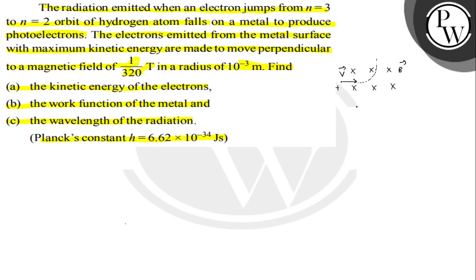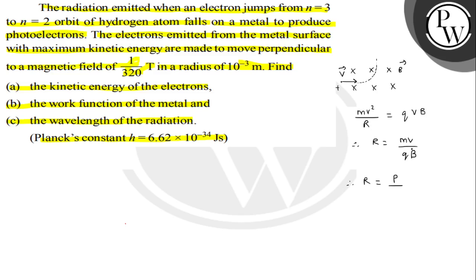The particle moves in a circular path. In such a condition, we can write mv²/r equals QVB, meaning the centripetal force is provided by the magnetic force. From here, the radius r = mv/QB. We can also express momentum in terms of kinetic energy: r = √(2mK) / (QB).